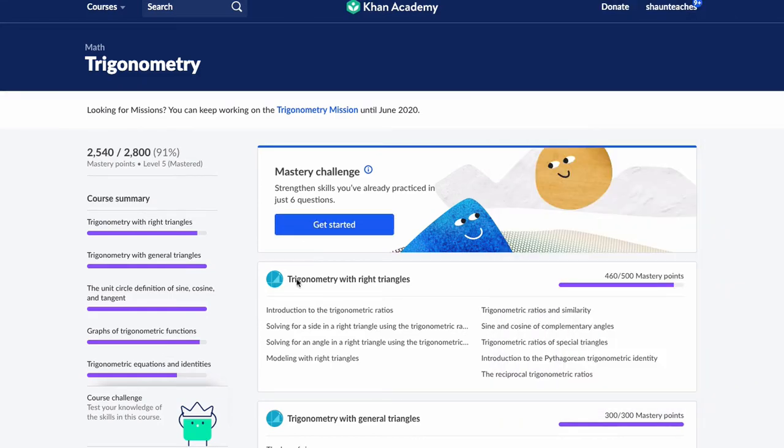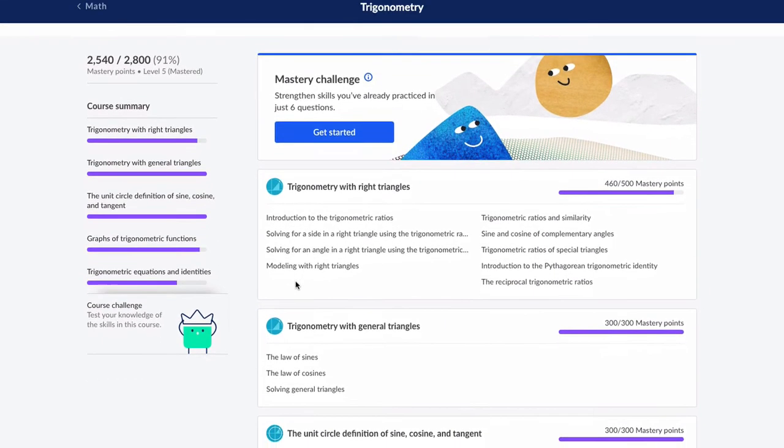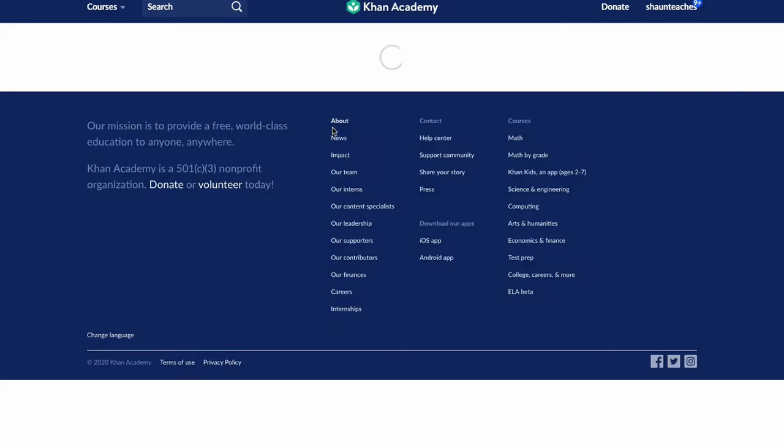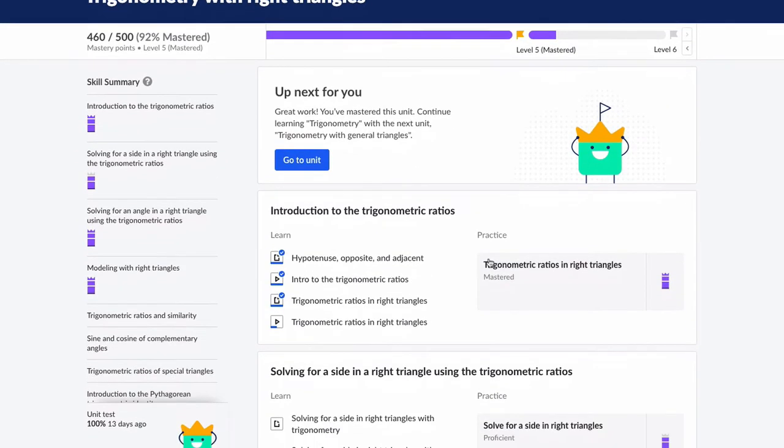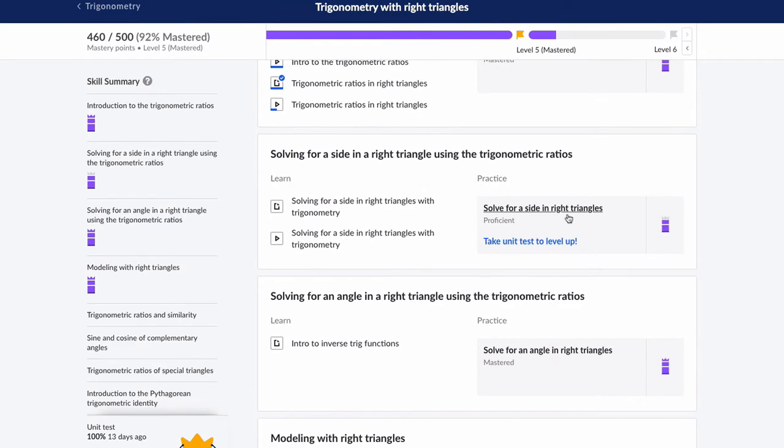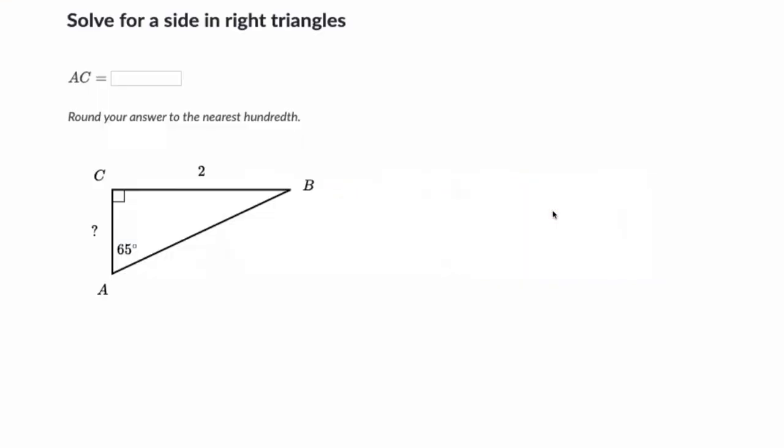All right, hello, welcome. In this video we're looking at trigonometry on Khan Academy, trigonometry with right triangles and solving for a side in right triangles. We're going to look at the problems you would encounter here and talk about how to solve them.